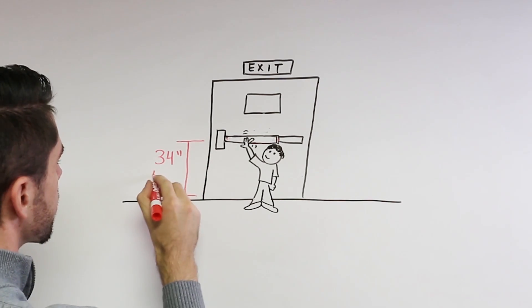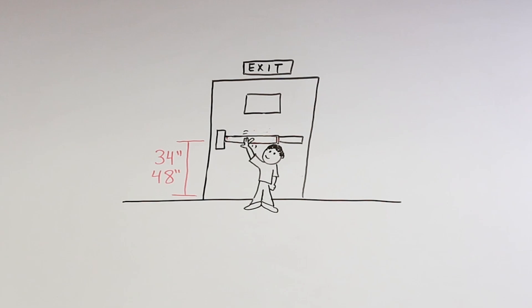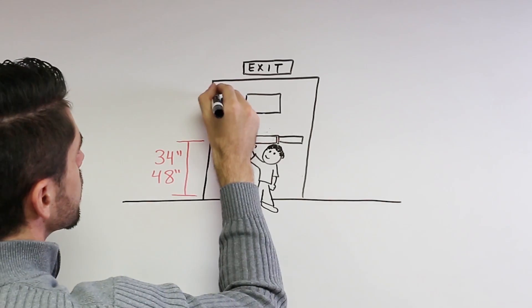Exit hardware must be mounted between 34 and 48 inches above the floor. Again, in an emergency, we don't want anyone to have to search for the device.